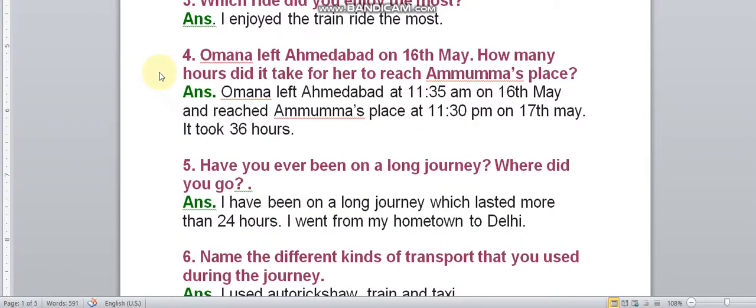Question 4: Omana left Ahmedabad on 16th May. How many hours did it take for her to reach Amma's place? The answer is Omana left Ahmedabad at 11:30 am on 16th May and reached Amma's place at 11:30 pm on 17th May. So it took 36 hours.